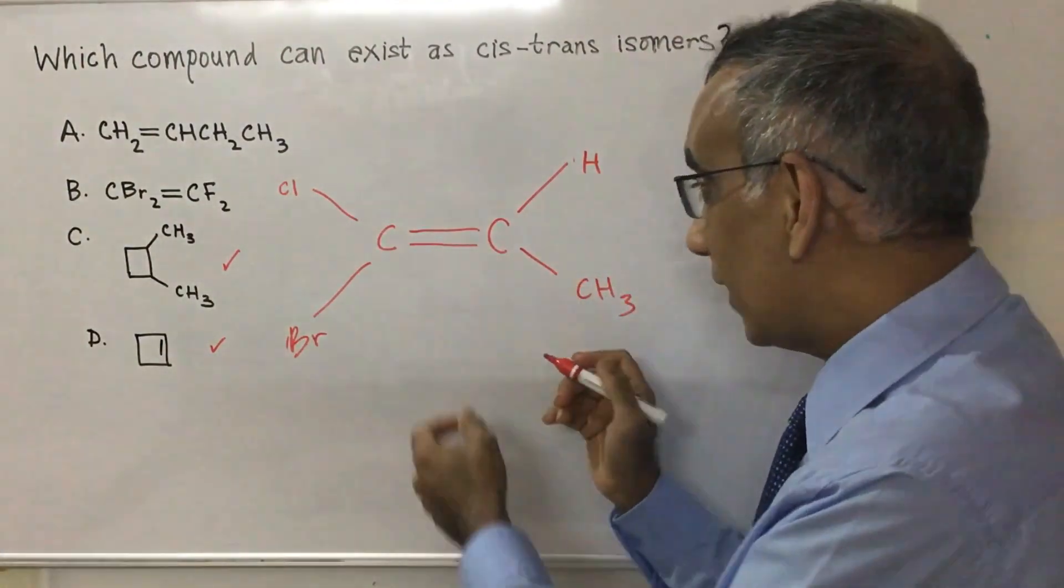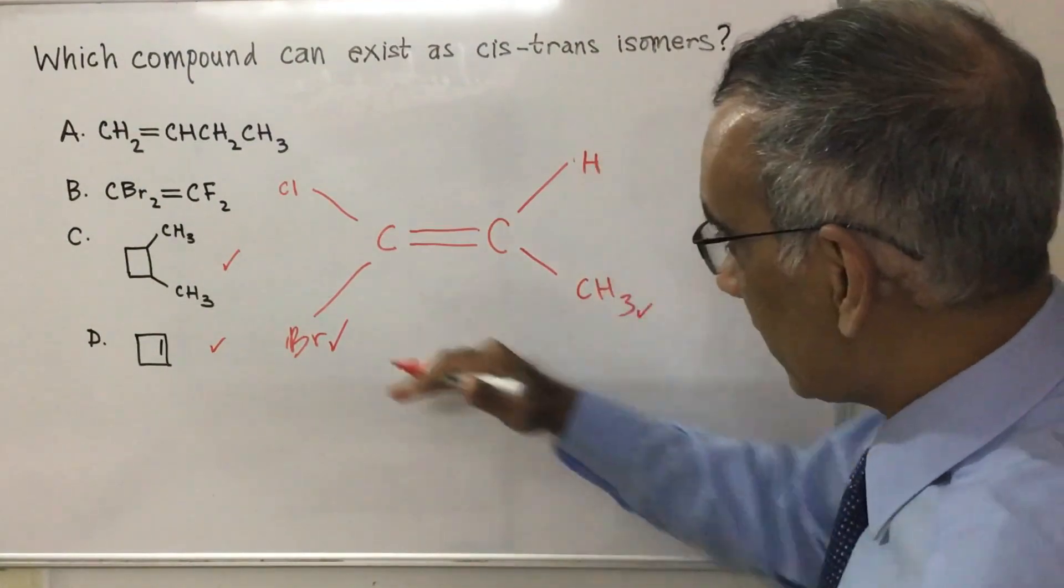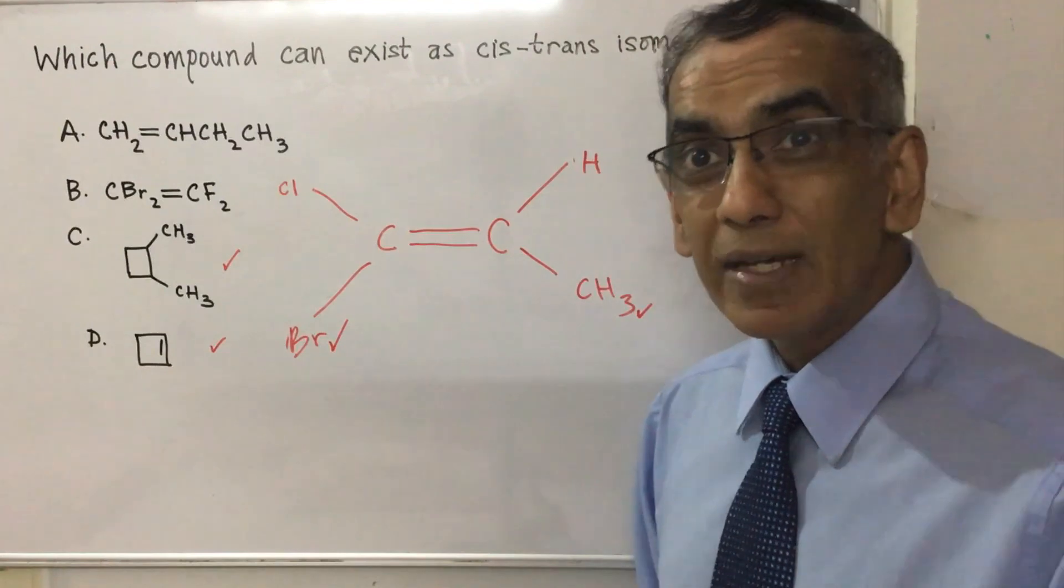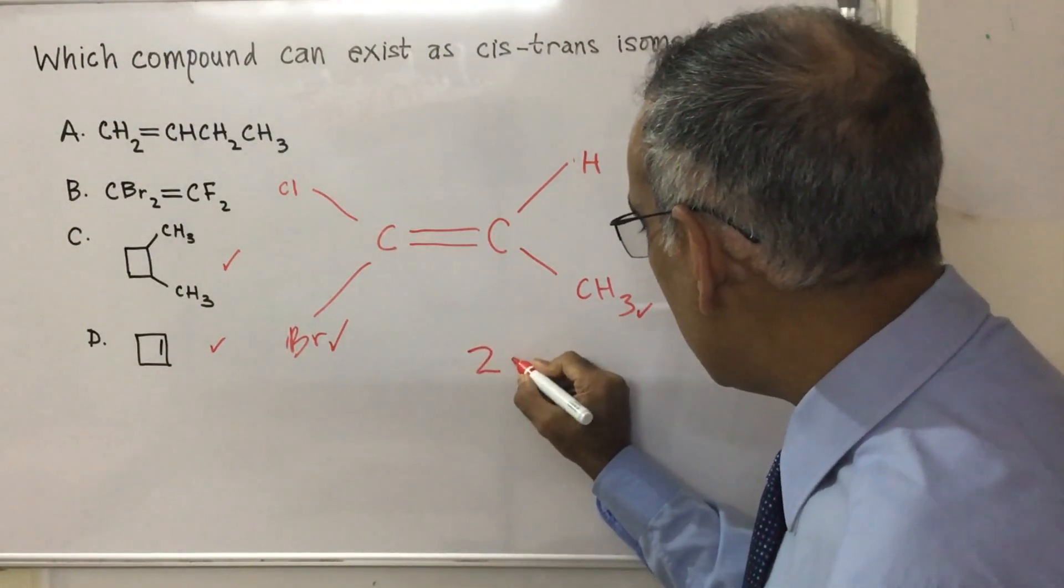Actually, in this case, because the two higher priority groups, this versus this, and this versus this, because the two higher priority groups are on the same side, you happen to have the Z isomer.